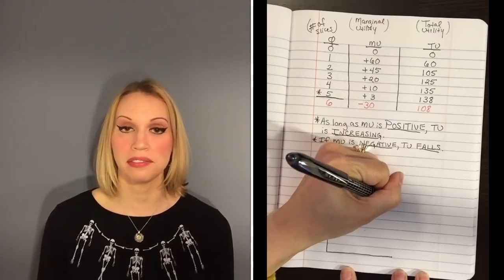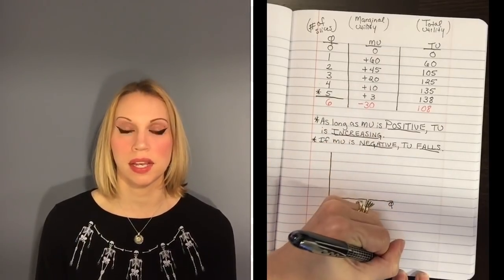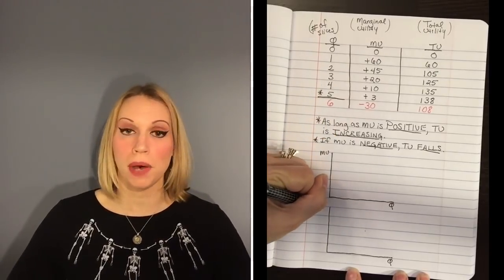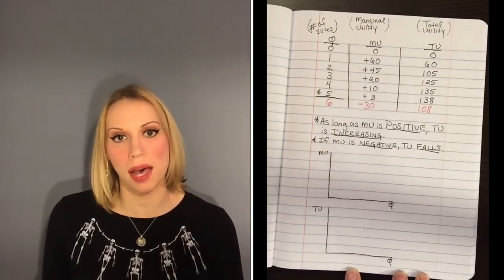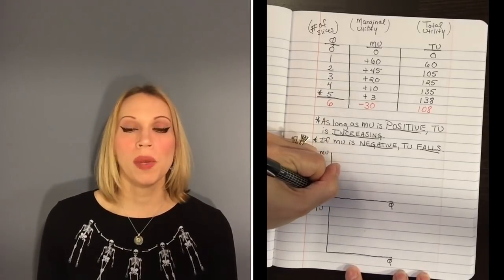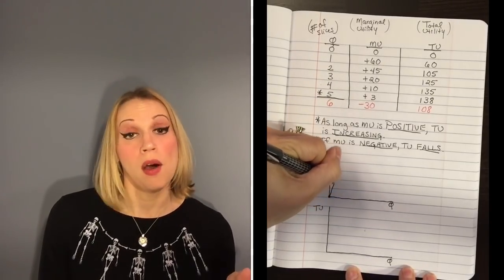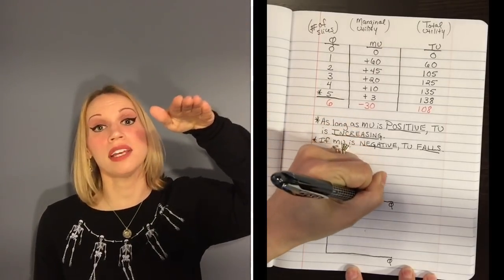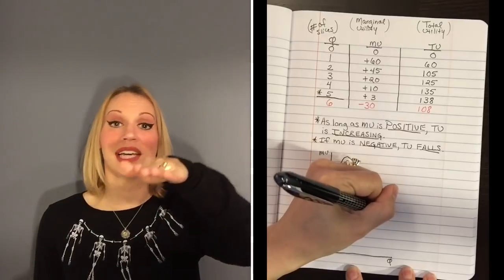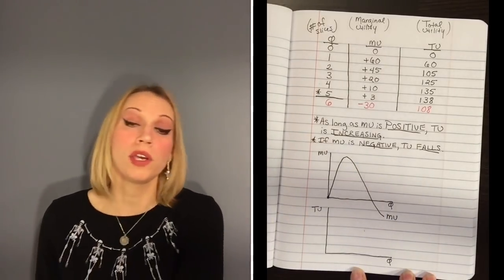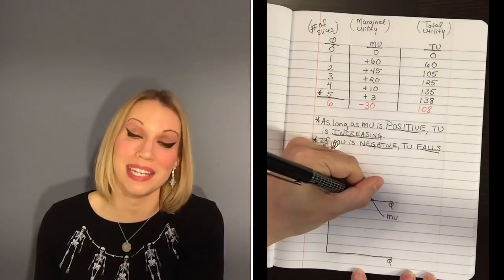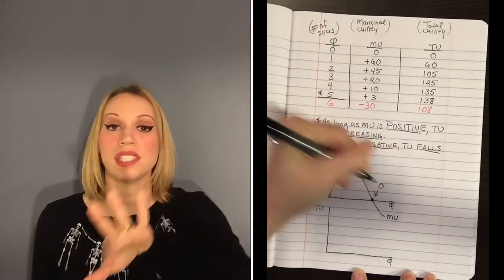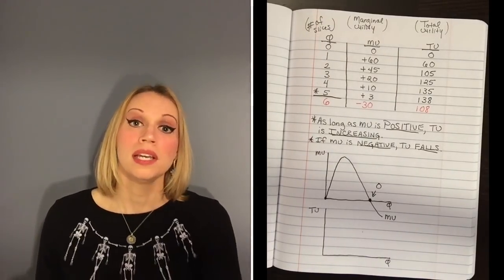Now if we were to put these things on a graph, it would look something like this. We're going to have our marginal utility graph on top and our total utility graph on the bottom, and we're going to line them up. Think about our marginal utility curve: when we ate that first slice of pizza, we had a lot of satisfaction — 60. Then the second slice was 45, the third was 20, the fourth was 10, and then 3. And then finally we crossed the x-axis and it went negative. So your marginal utility curve is high at first, then it goes down, and eventually it can go negative.